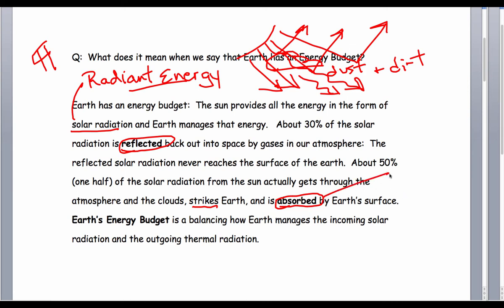And so, absorbed means that there is an energy transformation. And this energy transformation is going to be radiant energy to thermal or heat, which is absorbed by Earth's surface.